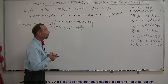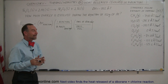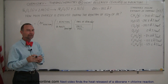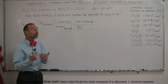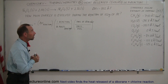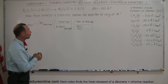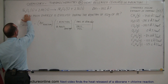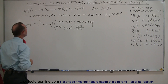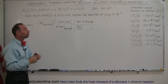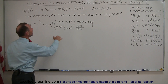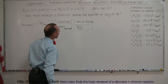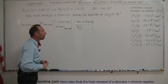Here's another example of how to use enthalpy in calculating the heat released in a reaction. In this case, we have some other parameters to deal with. We have a displacement reaction where we take ferric oxide and add aluminum, so aluminum is going to displace the iron. Now we have aluminum oxide and iron by itself.